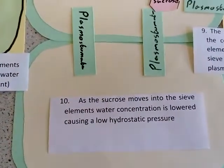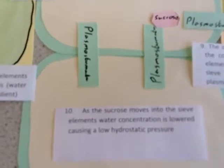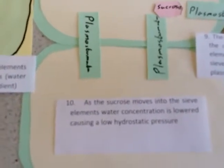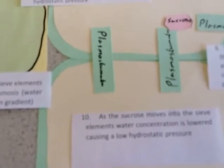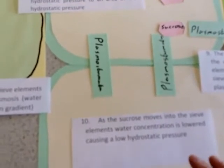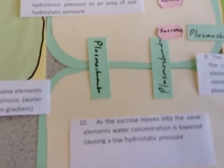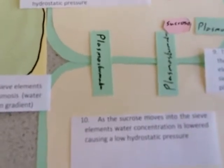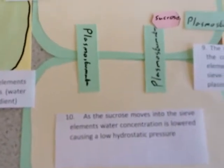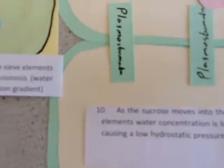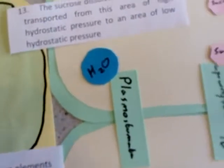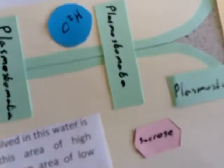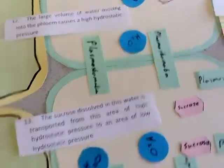As the sucrose moves into the sieve elements, this causes the water concentration in the sieve elements to become lower. Therefore, your water concentration now in your phloem sieve elements is going to be considerably lower than it will be in the xylem. Water will diffuse out of the xylem into your phloem sieve elements because it will move down a concentration gradient.